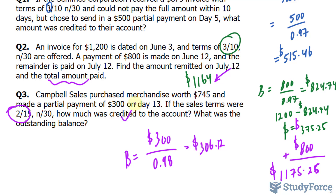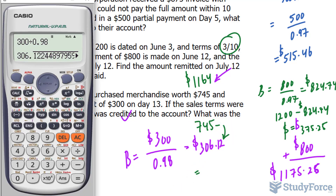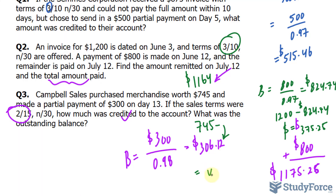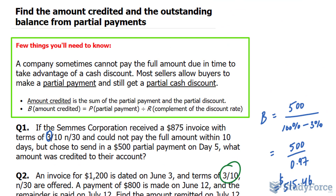That answers the first part. For the outstanding balance, we subtract the amount credited from the original invoice: $745 minus $306.12 gives us $438.88. And there you have it — three examples on how to find the amount credited and the outstanding balance from partial payments.